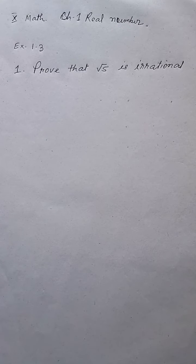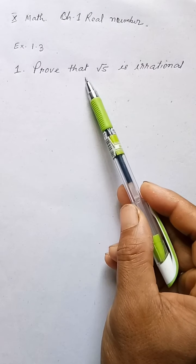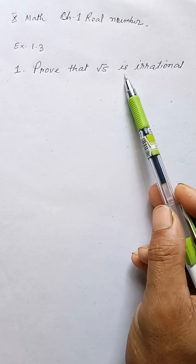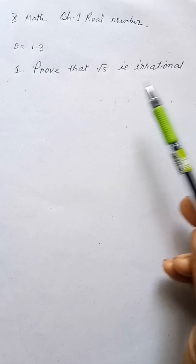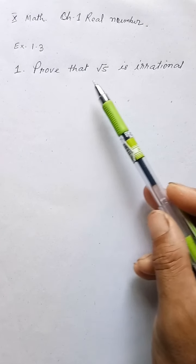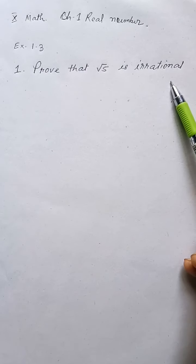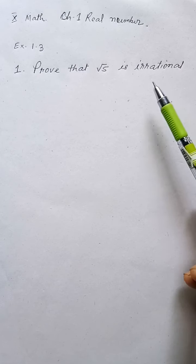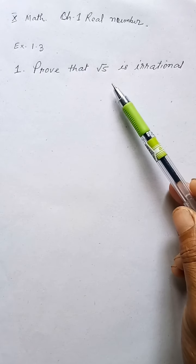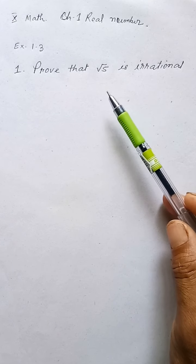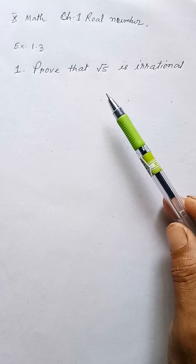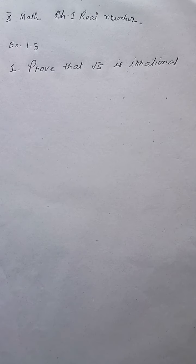This is from Class 10 Maths, Exercise 1.3, Question Number 1: prove that root 5 is irrational. We know root 5 is an irrational number, but we need to prove it. In a few simple steps we can prove it.